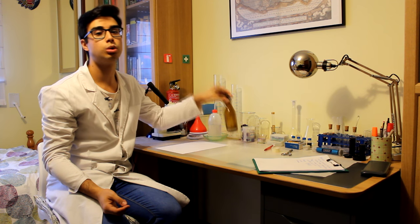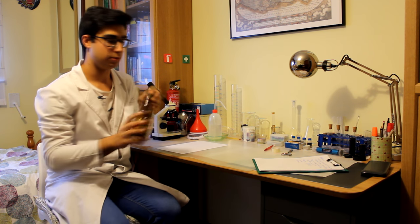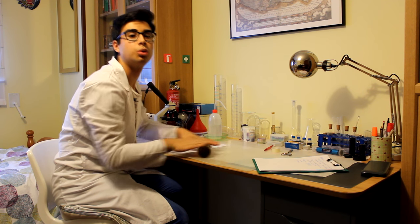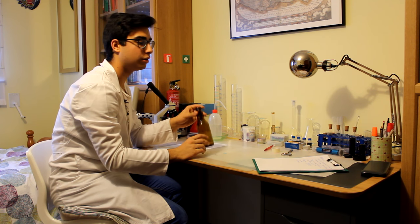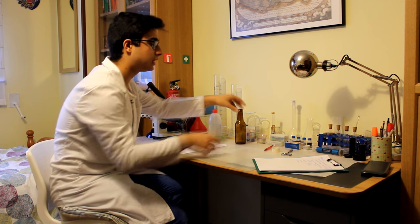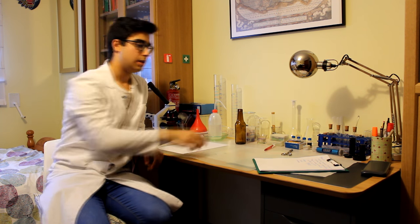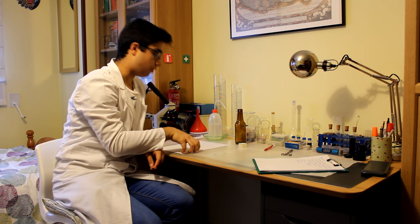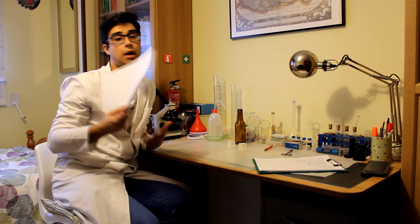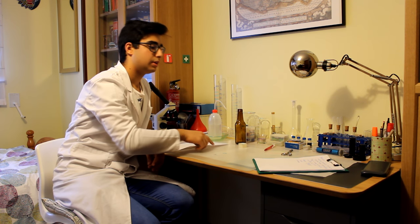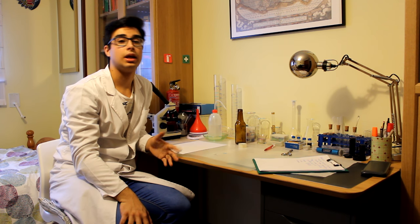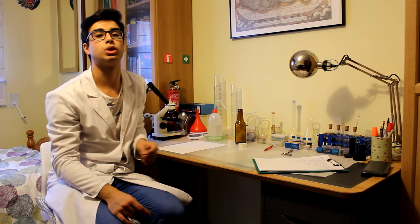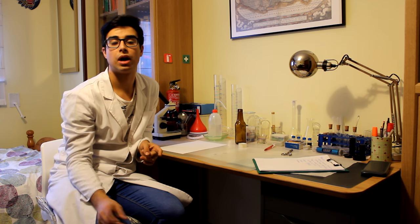Necesitamos algo también a modo de rodillo para machacar el carbón y que quede un polvo fino y uniforme. Por ejemplo, yo lo que he usado ha sido una botella de vidrio. Se hace así, en plan como si fuese un rodillo y queda un polvo fino y uniforme. Necesitamos celofán, necesitamos un folio en blanco al menos por una cara. Y luego, después, si tenéis escáner, está guay porque podemos escanearlas y mejorarlas con un editor de fotos en el ordenador.